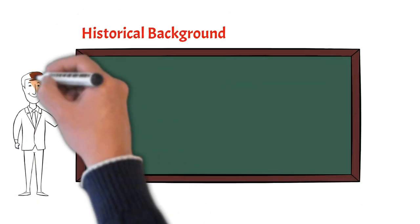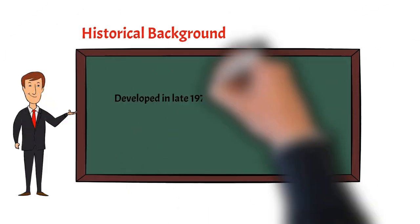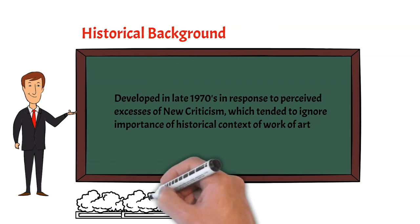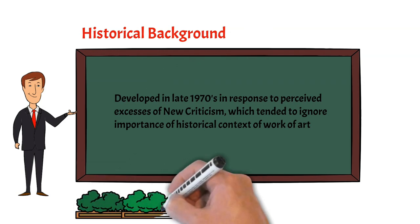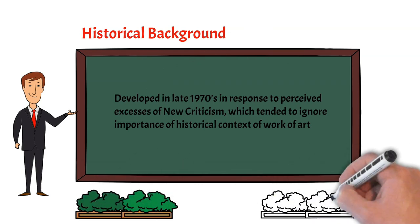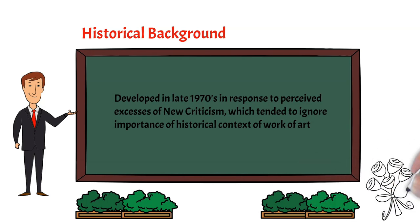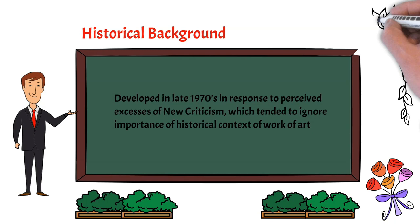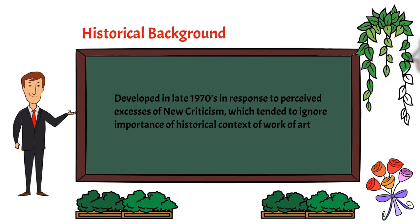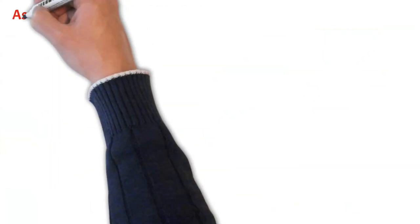Now, some of the historical background of new historicism: it was developed in the 1970s in response to perceived excesses of new criticism, which tended to ignore the importance of historical context of the work of art. Remember, new critics mostly focused on the text and not on historical context.